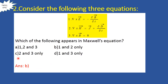Next problem: consider the following three equations — del cross E equals minus dou B by dou t; del cross H equals J plus dou D by dou t; del cross B equals zero. Which of these appear in Maxwell's Equations? The first equation is based on Faraday's Law, so it is a Maxwell's Equation. The second is based on Ampere's Law, so it is also a Maxwell's Equation. The third, del cross B equals zero, is not valid — the correct form is del dot B equals zero. So option B is the right answer.